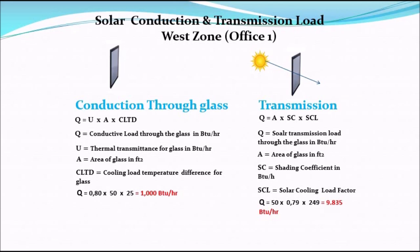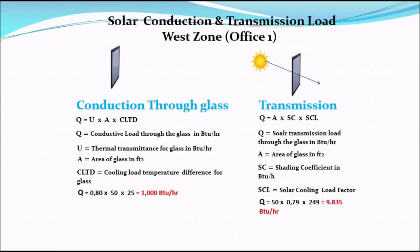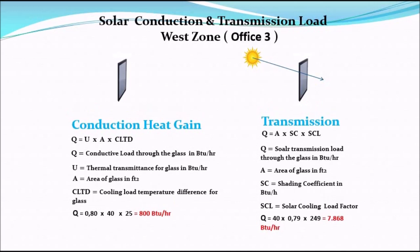The next thing to calculate is the transmission load through the glass. To determine the transmission load, we use the formula Q = A × SC × CLF, where Q is the transmission load through the glass, A is the area of glass in square feet, SC is the shading coefficient, and CLF is the solar cooling load factor. Plugging in the numbers gives a total transmission load of 9835 BTU/hr through our glass.